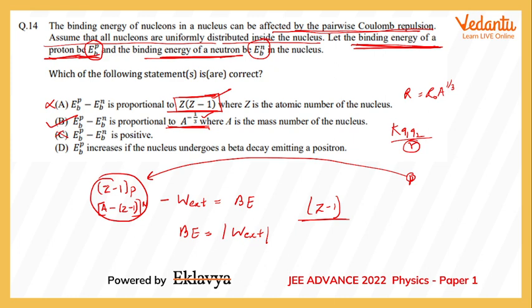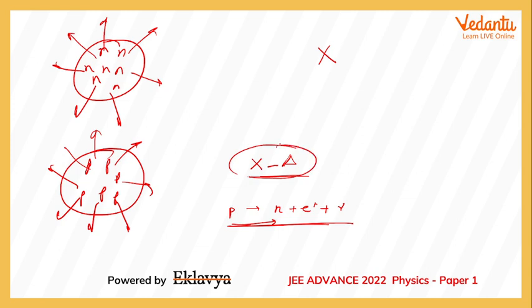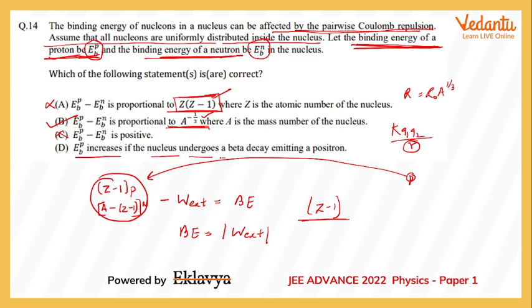If I go for option D, it says that the binding energy of the proton increases if the nucleus undergoes beta decay emitting a positron. In beta plus decay, a proton gets converted into a neutron, emitting a positron and a neutrino alongside. So we are moving from a system with more protons to one with fewer protons. If we continue to assume these emissions happen, the entire proton group will get converted into a neutron group — meaning we are moving toward higher binding energy. So option D should also be correct.